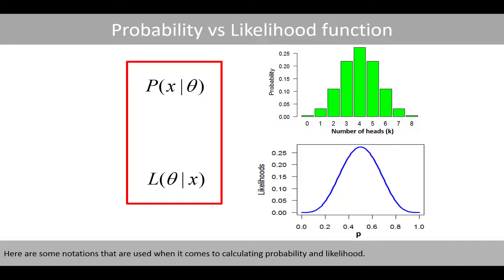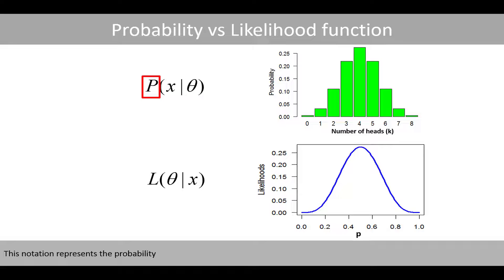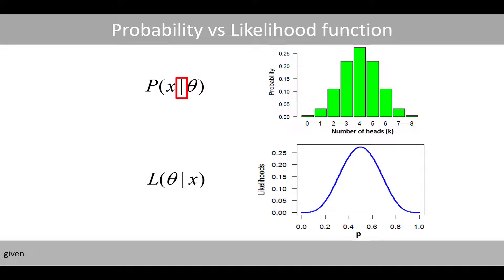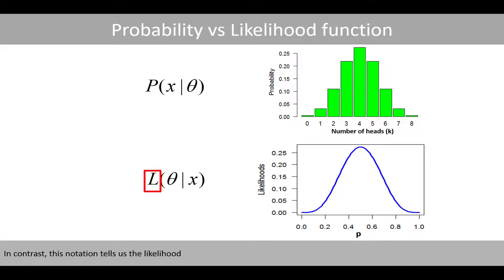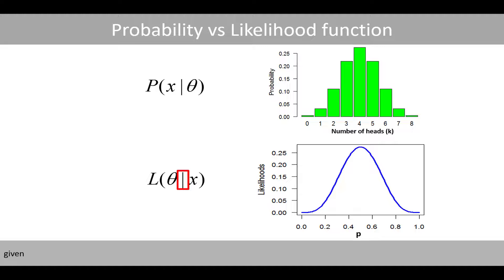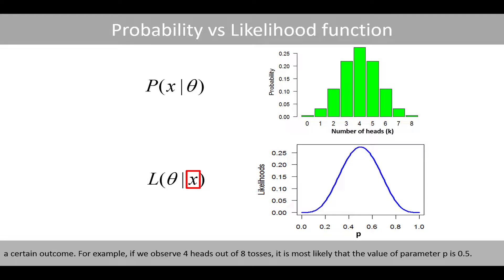Here are some notations used when calculating probability and likelihood. This notation represents the probability of observing a certain outcome — for example, four heads out of eight tosses — given a set of parameter values, such as a fair coin where the probability of tossing a head is 50%. In contrast, this notation tells us the likelihood for a set of parameters, such as the probability of tossing a head, given a certain outcome. For example, if we have observed four heads out of eight tosses, it is most likely that the value of parameter p is 0.5.